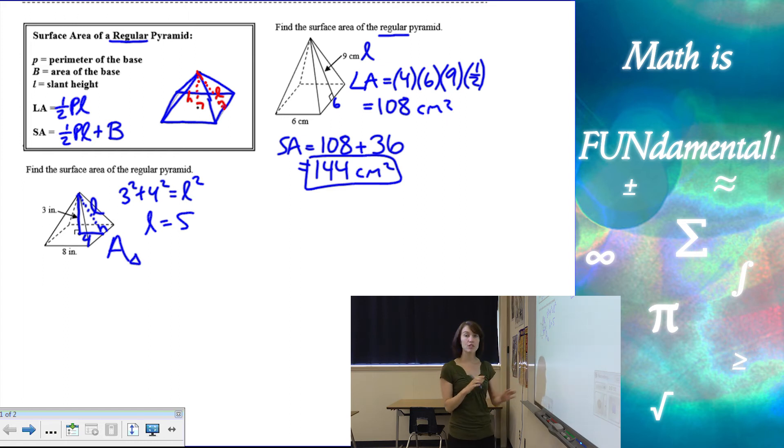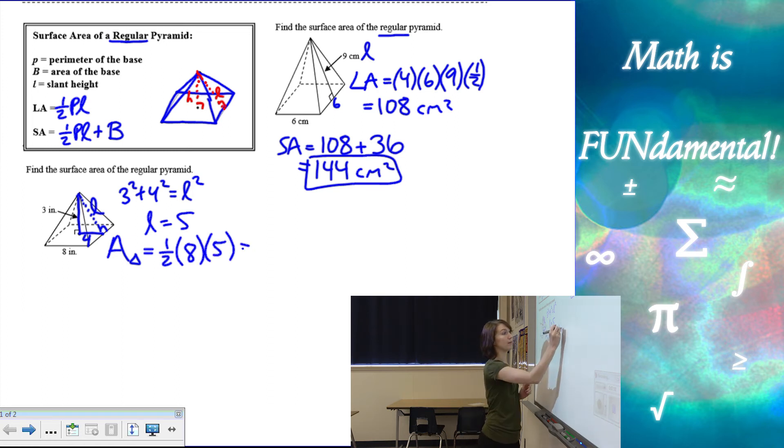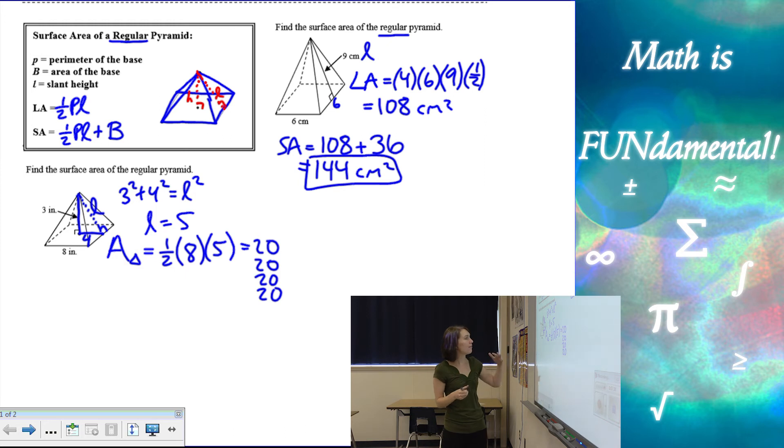So, let's find the area of just one of the triangles. It's 1 half base, which is 8, times the height, which is 5. So, that's going to give me 20. Now, how many of those triangles do I have in this problem? I have 4. So, let's write that 4 times. And then I want to add that to the area of the base, and it's a regular pyramid. So, it's going to be 8 times 8, which is 64.